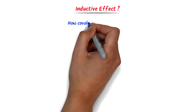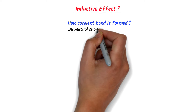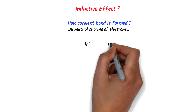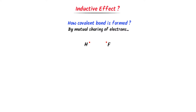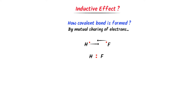What is inductive effect? First, let me teach you one important concept: how is a covalent bond formed? We all know that by mutual sharing of electrons, a covalent bond is formed. For example, consider hydrogen and fluorine atoms. Hydrogen and fluorine share one electron each to form a covalent bond. Thus, a covalent bond is formed when a pair of electrons is mutually shared between two atoms.